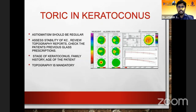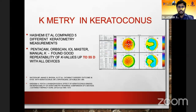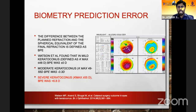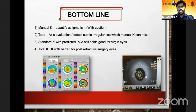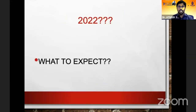With regards to keratoconus, up to 55 diopters the surprise we get is not much — at most a mild hyperopic shift. The bottom line is: manual K still has a role to quantify astigmatism; topography can be used for axis evaluation and detecting subtle peripheral corneal irregularities; standard K with PCA in Barrett's is good enough for virgin eyes; and total K with Barrett's is excellent for post-refractive surgery eyes.